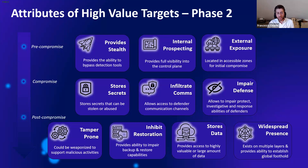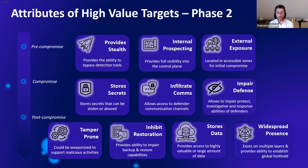For simplicity we use the simplified kill chain. If something provides stealthiness — basically making it difficult to, for example, whitelist any rule or executable on the console of that specific software application — then it provides stealthiness. As an adversary, I would want to go after that specific set of tools to find and advance my mission. That is at the pre-compromised phase. Or if something gives me visibility into the control plane — think about network management tools or the famous SolarWinds — that would be something for internal prospecting, or something that is tamper-prone and has widespread presence. We captured these into these categories.